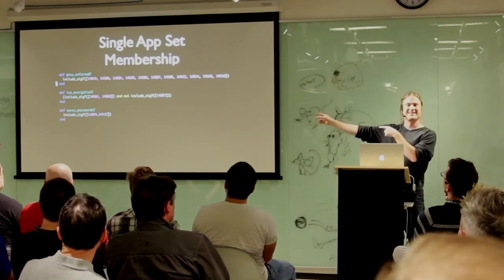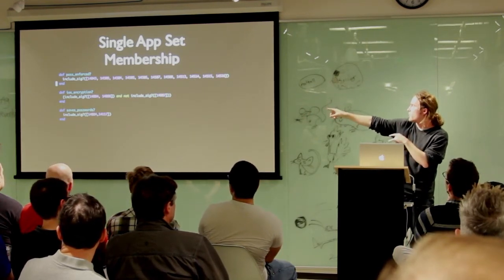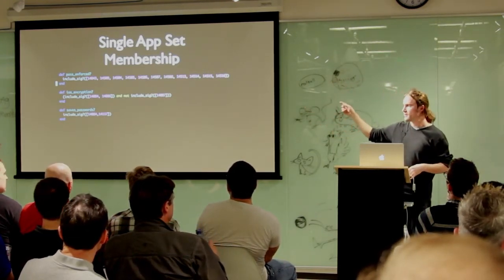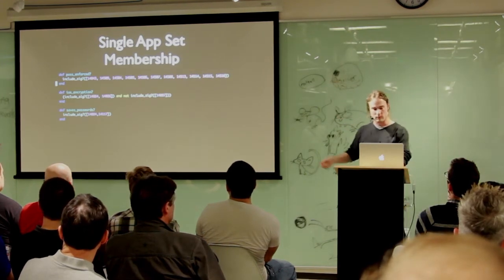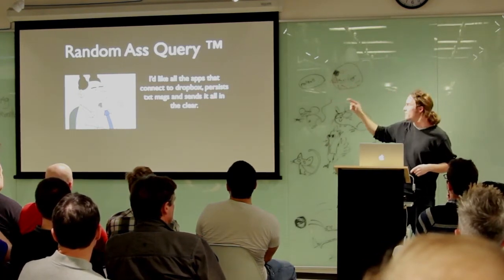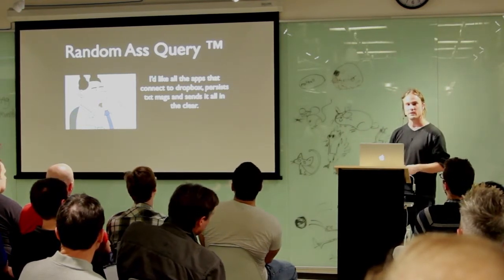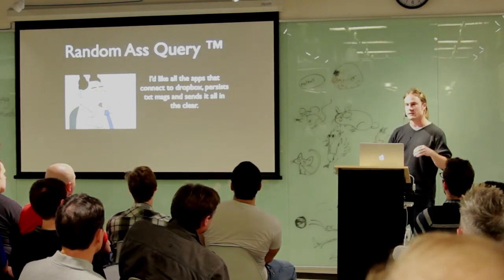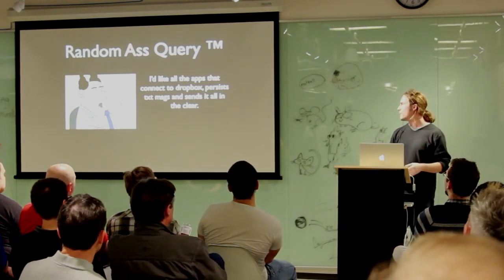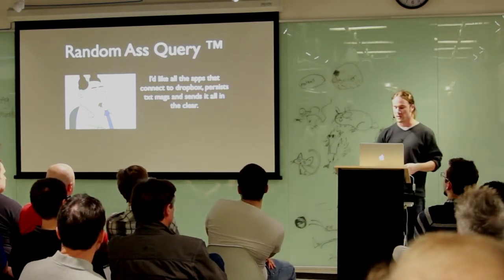As you can tell, this is not Go. You'll see these little methods spread all throughout the code. But what you'll note is it's a single app set membership. It's not on an entire collection. That's actually not an easy problem to do. Of course, then you have Joe Bob Boss and he has this random ass query of the day. I like all the apps that connect to Dropbox, persist text messages and send it all in the clear back to the servers. So we run these queries and these queries just take a long time to run. It's not efficient to store, it's not efficient to query. It's just a pain in the ass.